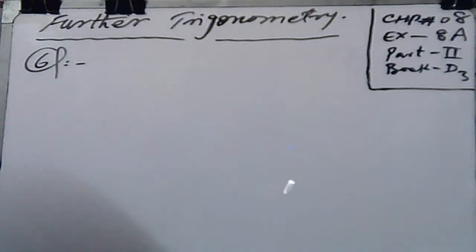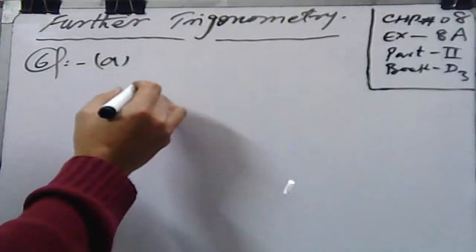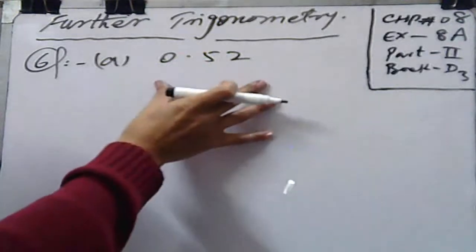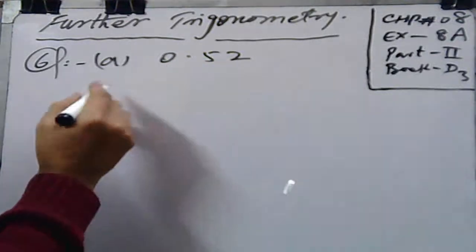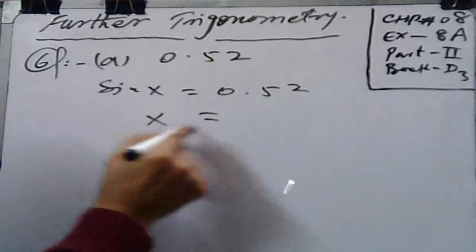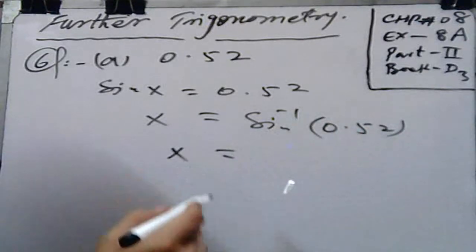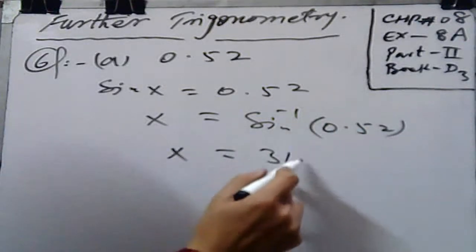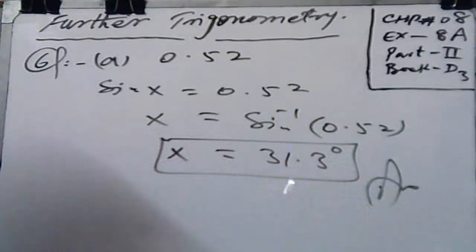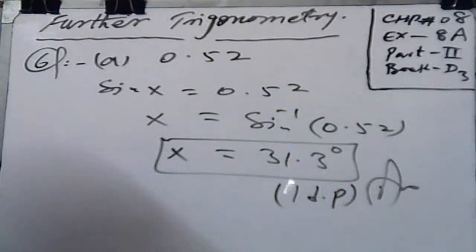Question number 6: Find an acute angle whose sine is 0.52. It means we have to find the value of x. As given that sin x is equal to 0.52, the value of x is sin inverse 0.52. With the help of a calculator, x equals 31.3 degrees, which is an acute angle less than 90. That is your required result, up to 1 decimal place.